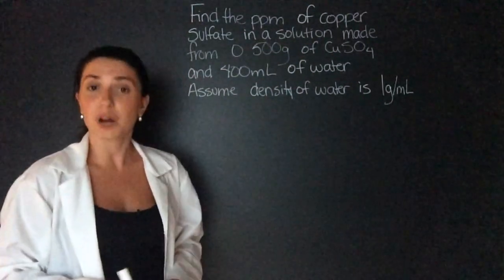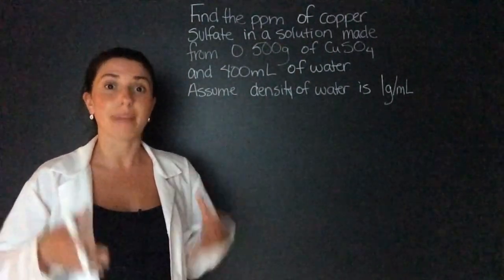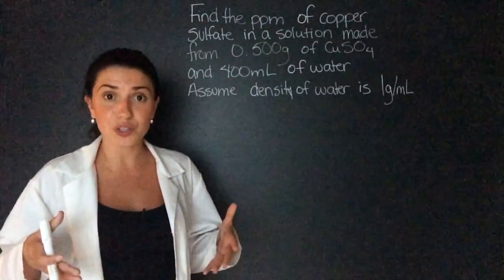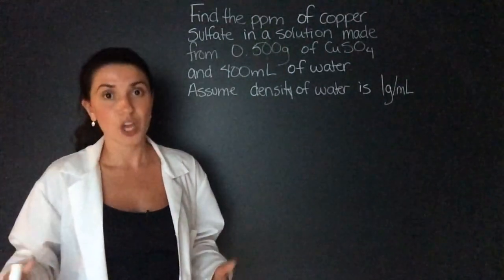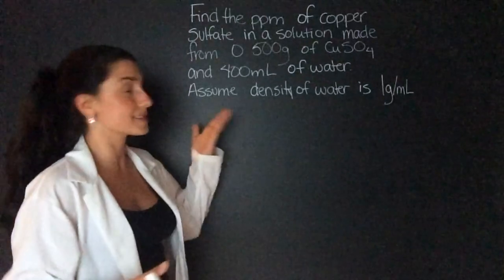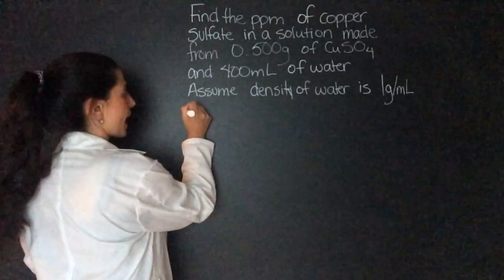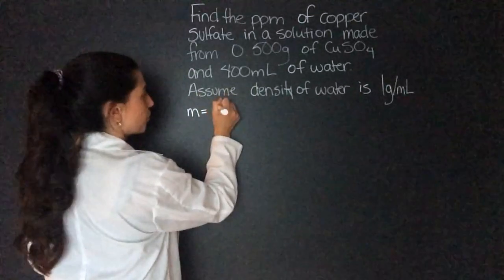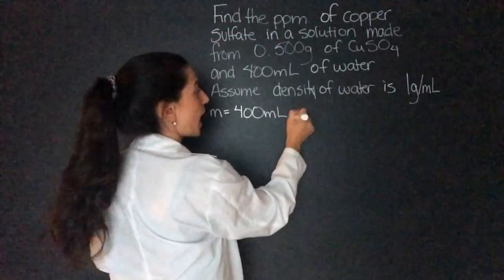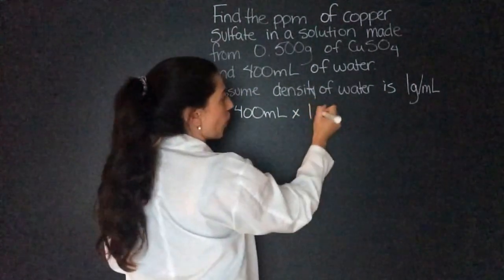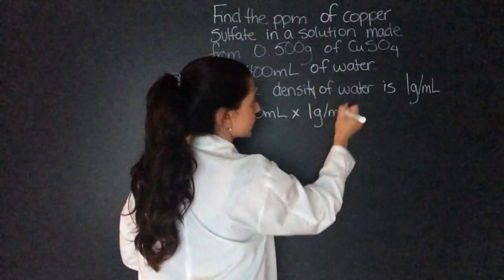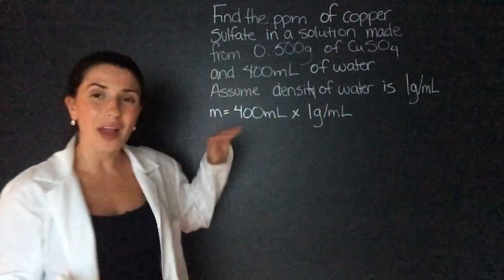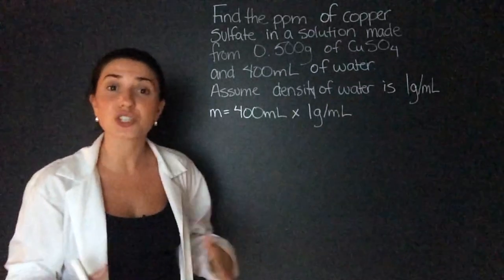Remember with parts per million we're dealing with mass of both the solute and of the solution. So we have to find the mass of water. The mass is going to be the volume, 400 milliliters, times the density which is one gram per milliliter. If you ever forget how to do this, just go to the units.